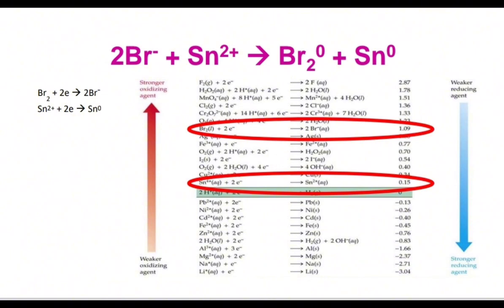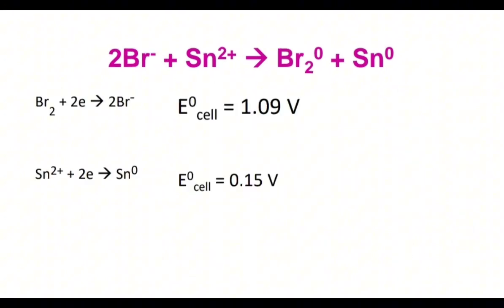And for stannum it's 0.15. We write them. So we write electric potential of the cell for each of them. We see that for bromine it's 1.09 volt; for stannum it's less—it's 0.15 volt.